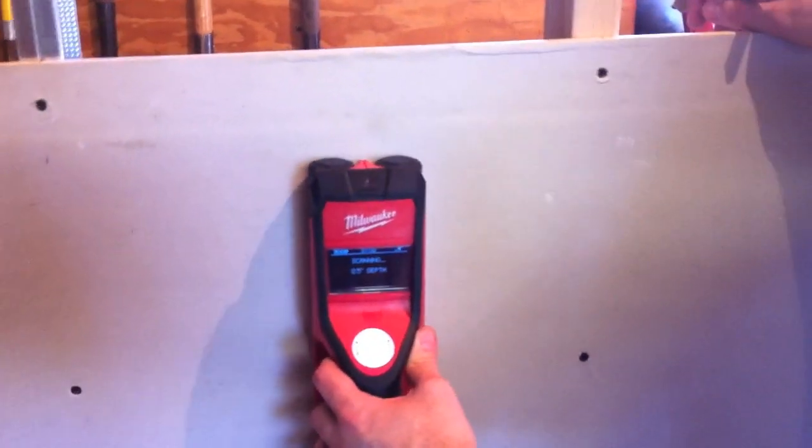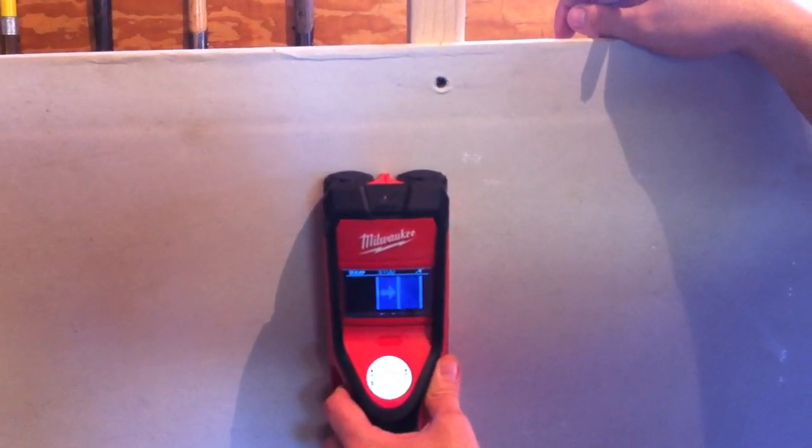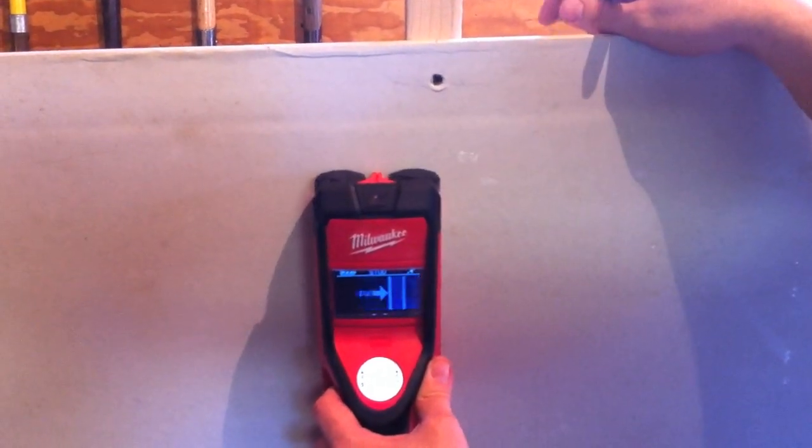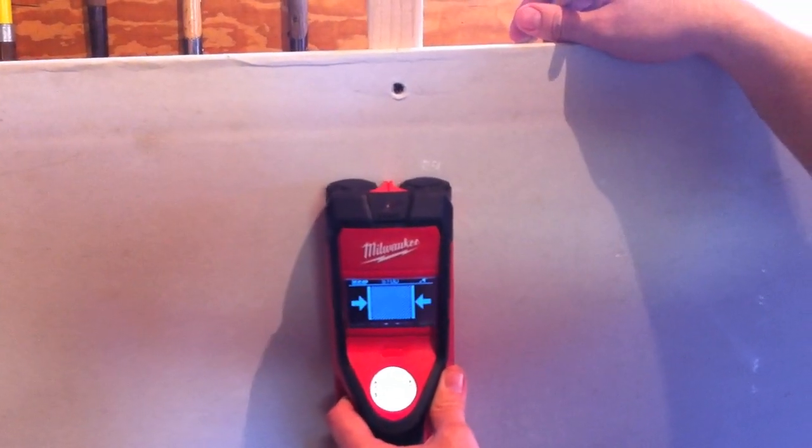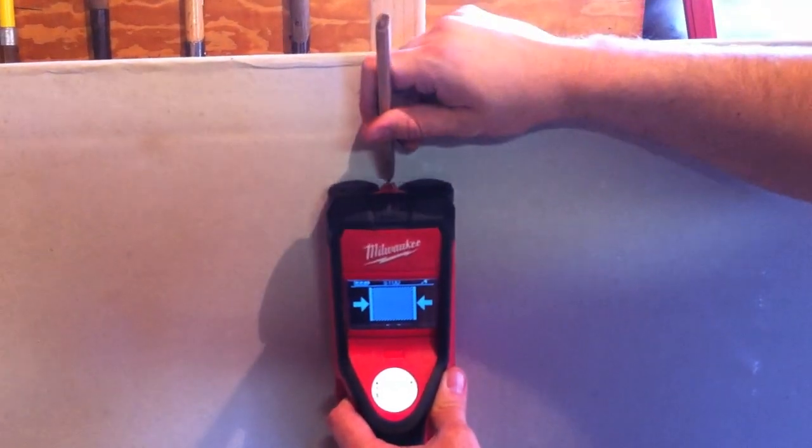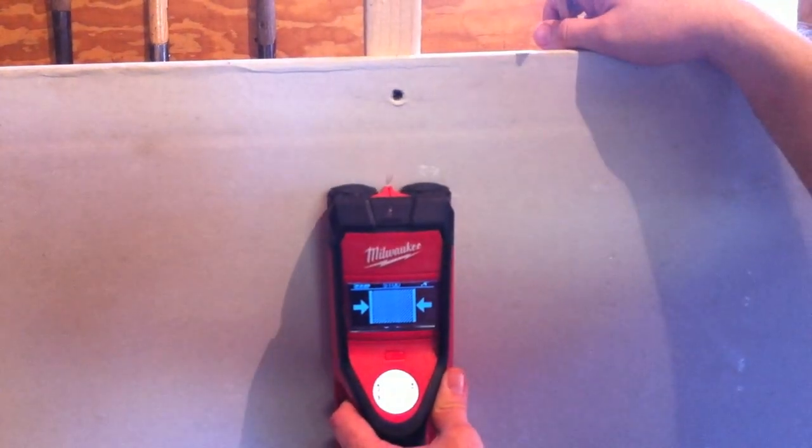So we're going to go back over to the right. We're still scanning, and it found the other stud. So this is a wood stud this time. So we cross over until we've got both arrows, center of the stud. So we'll mark it, and that's the center of the stud.